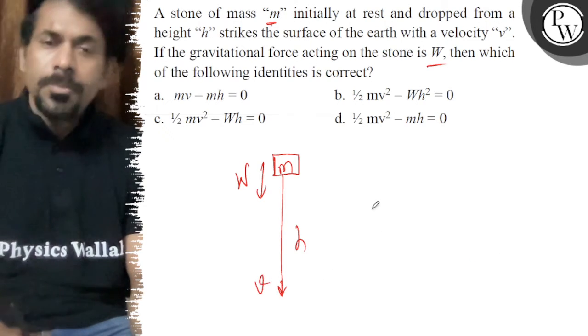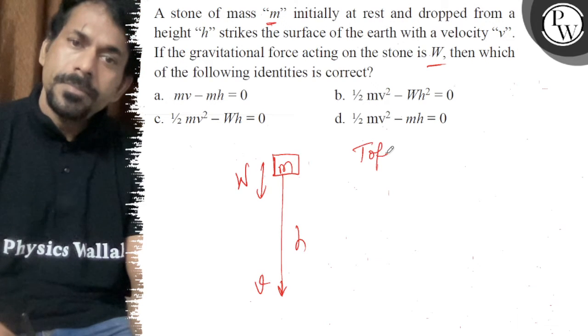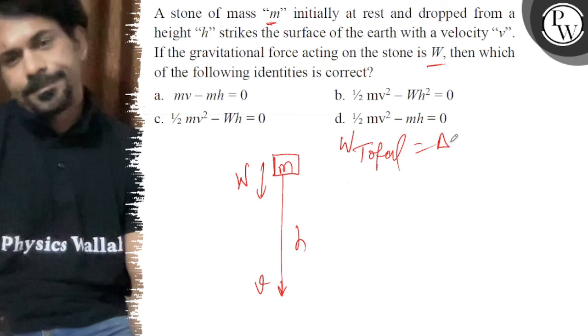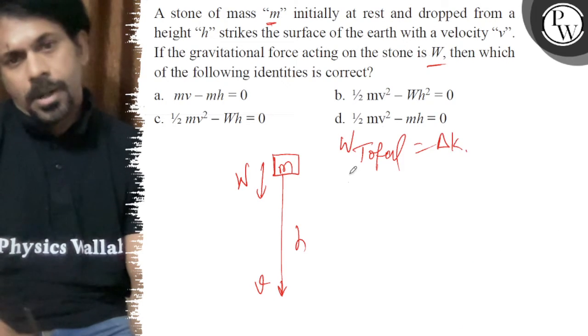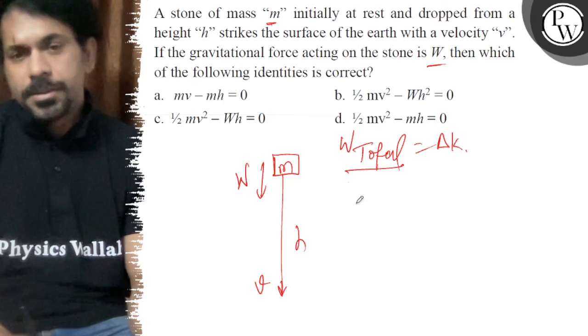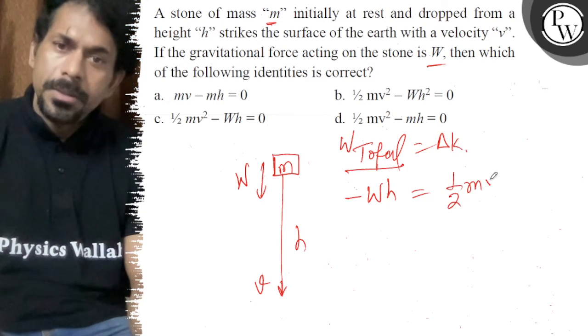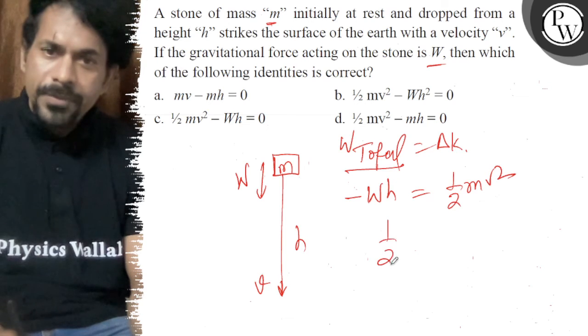So we say the total work done is nothing but the change in kinetic energy. Now, work done by gravity is -W×h, which is equal to ½mv². So we have ½mv².